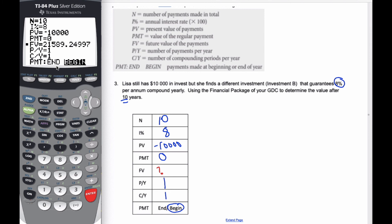And so in that time, Lisa will have, she will have $21,589.25.